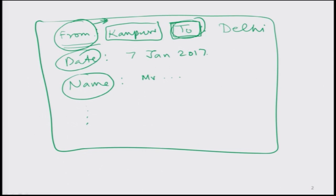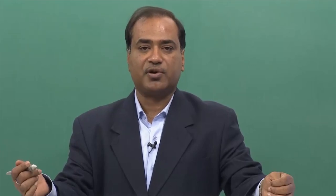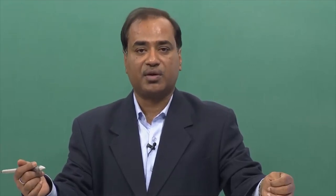Whatever date is given by the ticket person has to be entered only at the date column. That means I need to print my input at particular places, or in simple words, I need the outcome in a certain format. You have seen earlier that different types of output come in a special way which is predefined inside R software. But now what we want is the output in a particular format according to our own requirement.